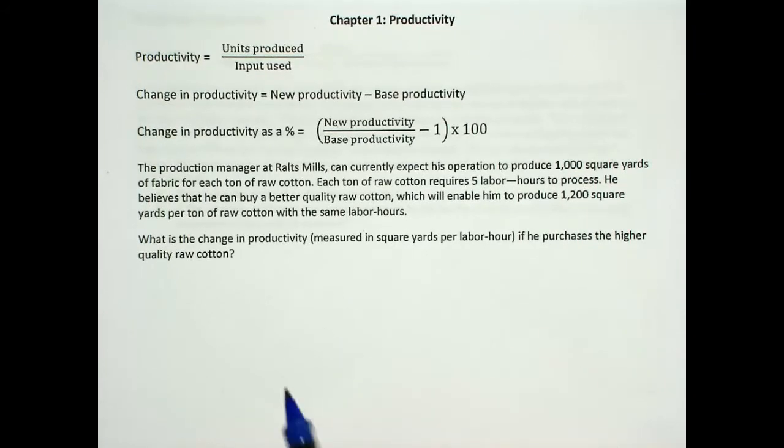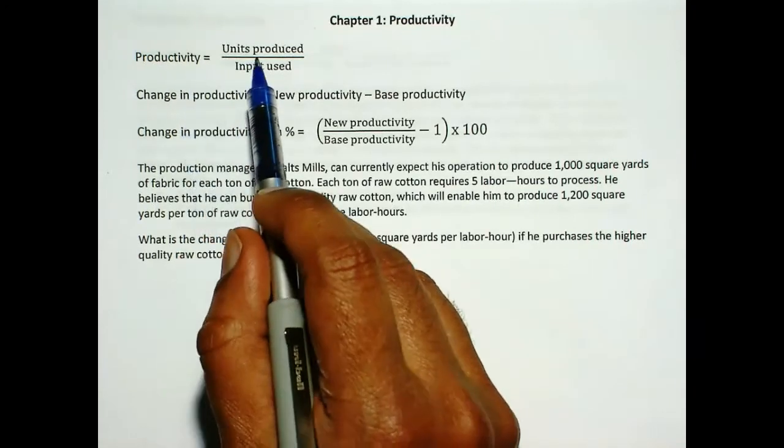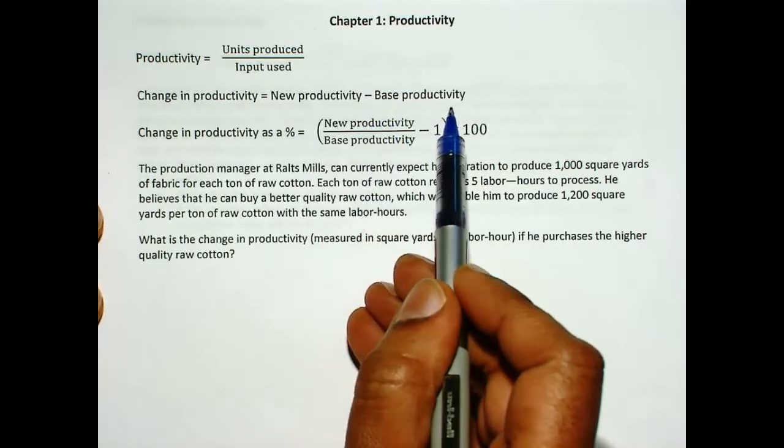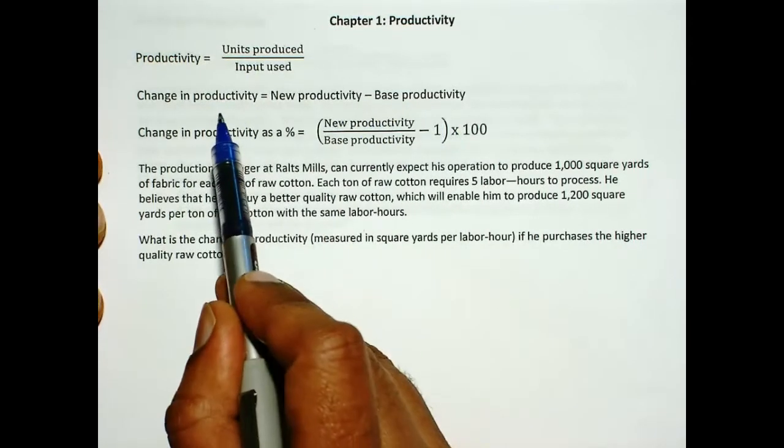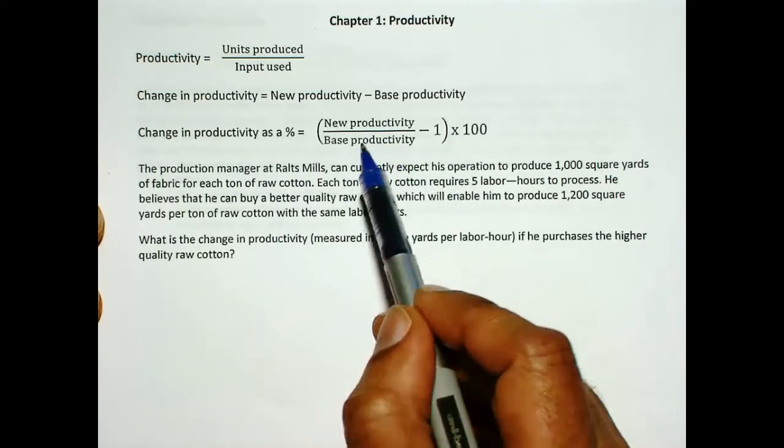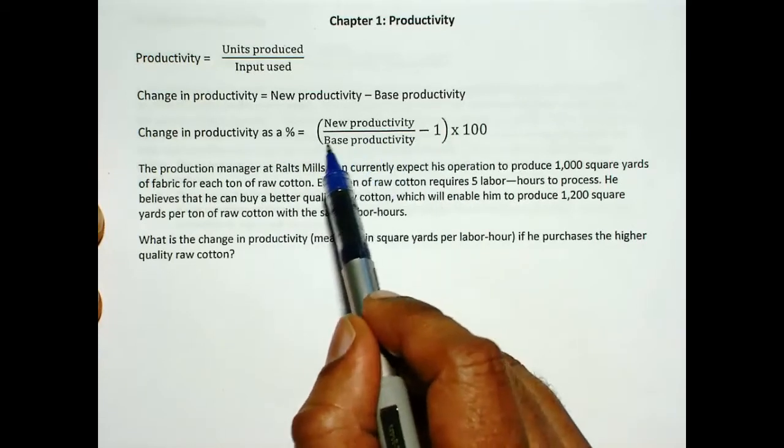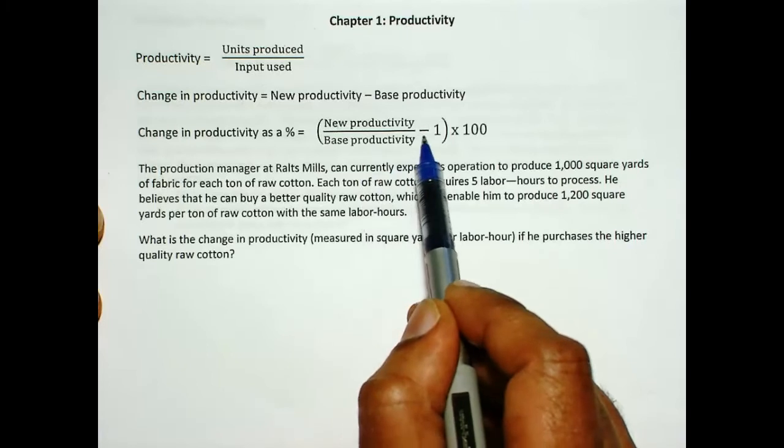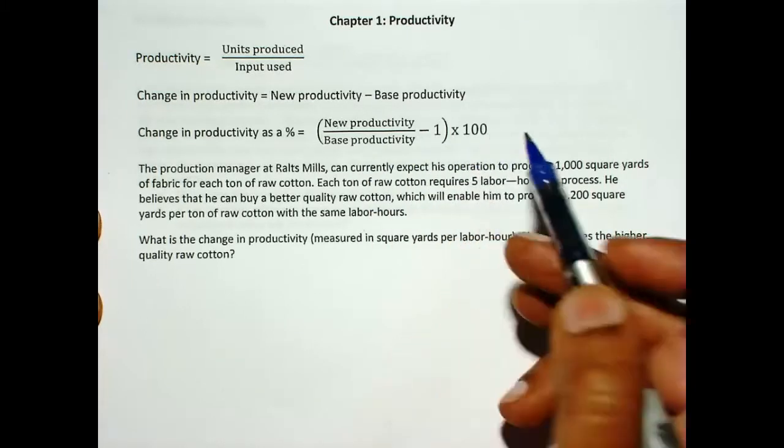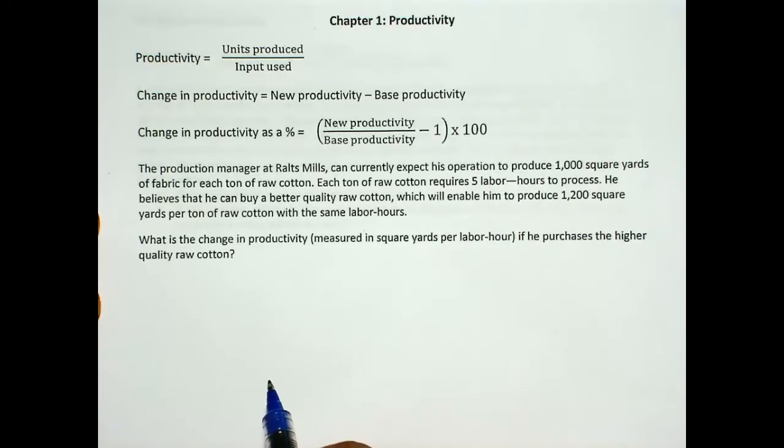We know that productivity is output over input. The change in productivity is new productivity minus base productivity. We can express the change in productivity as a percentage using this formula: new productivity divided by base productivity minus 1, and we multiply by 100 to express as a percentage.